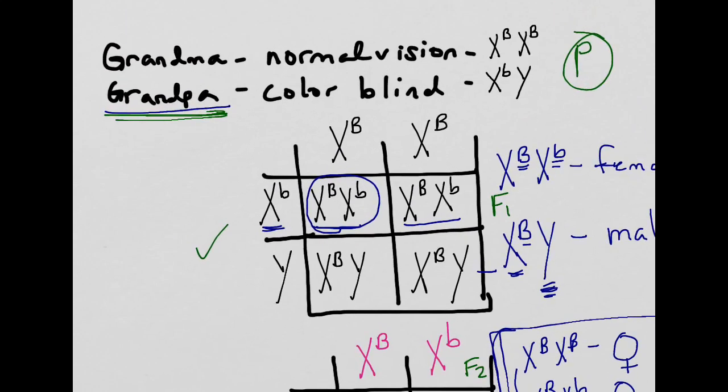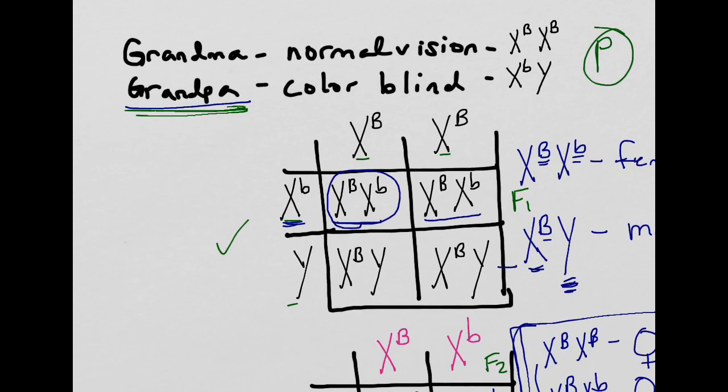Just remember the big thing that you need to remember to do when you're doing X-linked traits is to make sure that you put the X's and the Y's in place. You have to have those in place so that you know if the offspring is male or female. And so that you don't give two alleles to the boys. Okay. So the boys only have one shot. They're going to get a good one or a bad one. All right. If you have any questions on these, please feel free to contact me. Have a great day. Bye-bye.